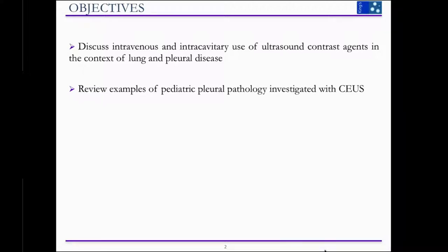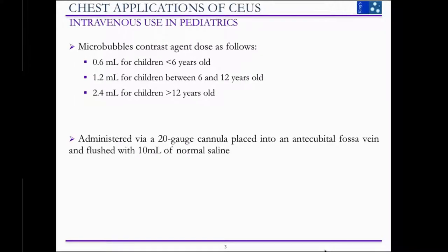I'll also review a couple of examples of pediatric pleural pathology investigated with contrast-enhanced ultrasound. A question we often get asked, particularly in dealing with children, concerns the intravenous contrast agent doses. We don't move away from what we use when looking at the liver or kidneys. It's exactly the same intravascular dose: 0.6 mls for children under six years, roughly 1.2 mls for children aged six to twelve, and 2.4 mls for children over twelve — very much like the adult dose in older children.